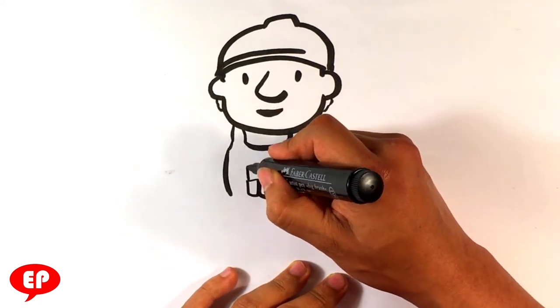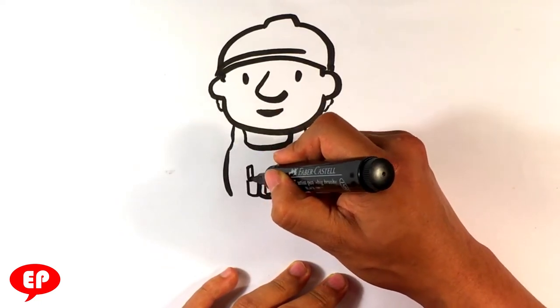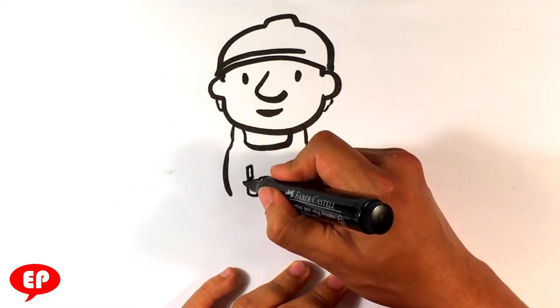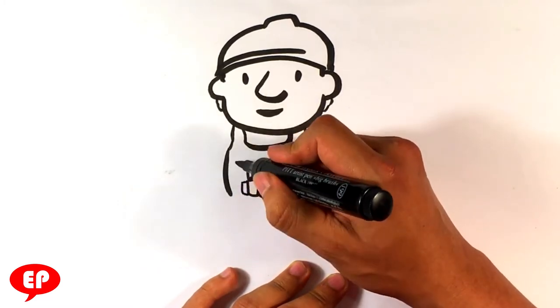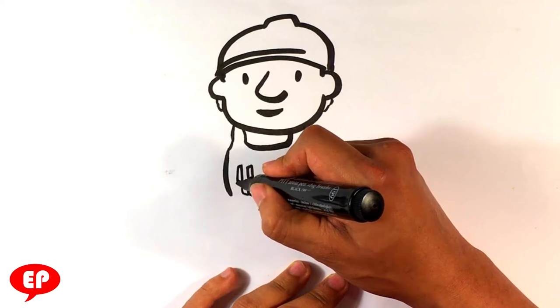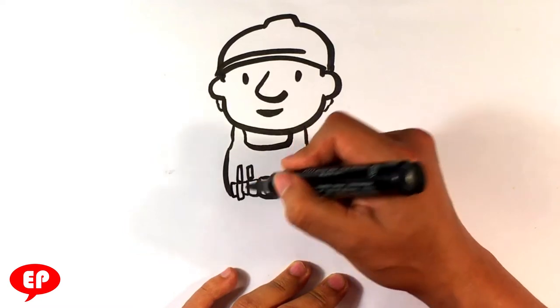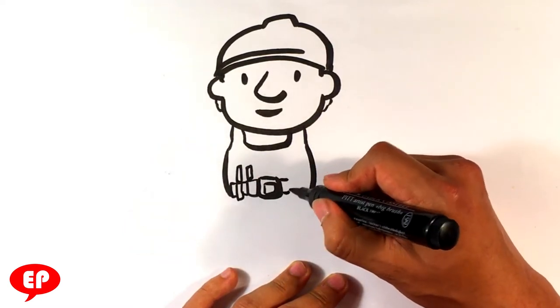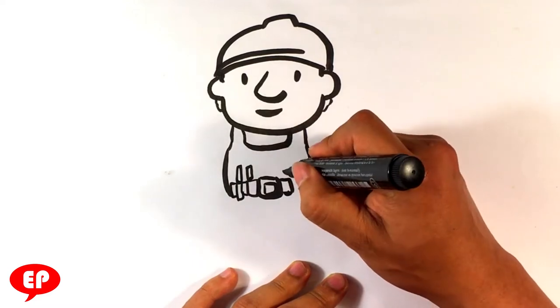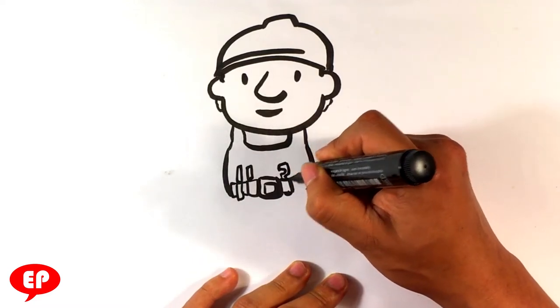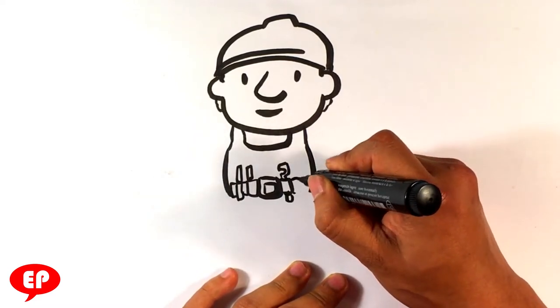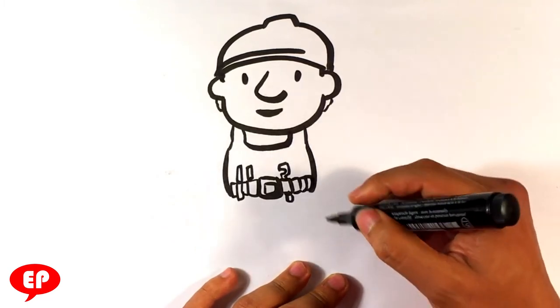I'm just going to throw a bit of a screwdriver here. These are very simple shapes, just rounded edge squares. Think of them as rounded squares. It's a tool belt, obviously. Maybe I'll throw a wrench in there.